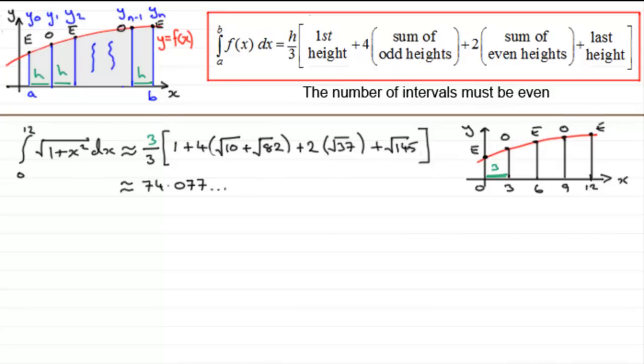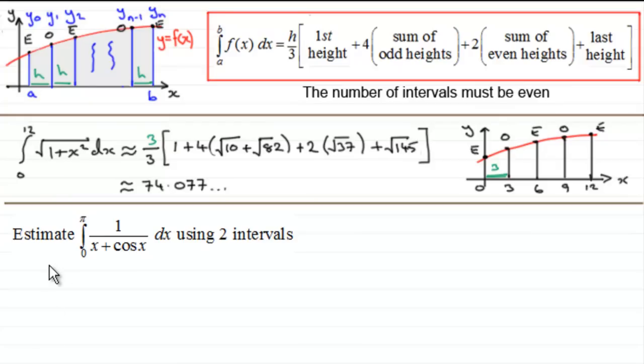So it's going to be four multiplied by the sum of the odd heights. Now in this particular example, we've only got two odd heights, this one here and this one here. This one here is when x equals three. So if we substitute three into here, we've got the root of one plus three squared. The root of one plus nine, the root of 10. And to this, we add what we get when we substitute x equals nine into here. So that's going to be the root of one plus nine squared. That's going to be the root of 82.